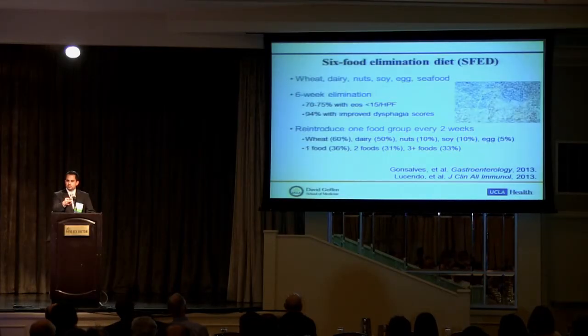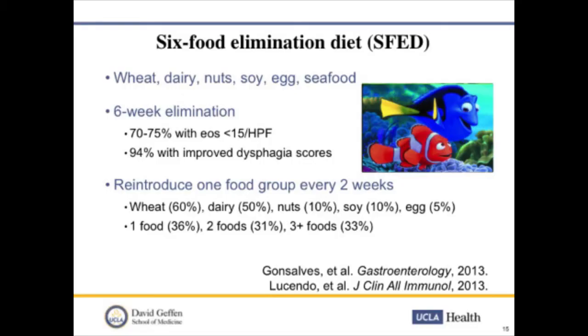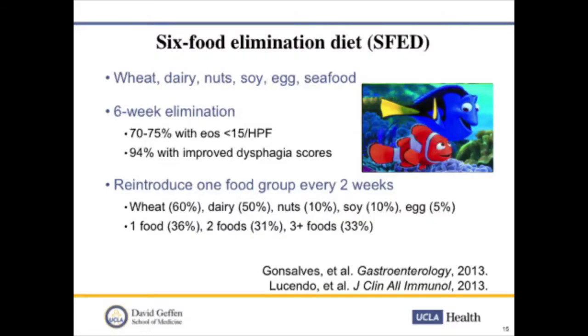The most popular option is the six-food elimination diet. The most allergenic foods are wheat, dairy, soy, nuts, eggs, and seafood — eliminated for six weeks. Studies from Northwestern and Spain showed about 70–75% improvement based on eosinophil count reduction, and over 90% had improvement in dysphagia scores. After six weeks, food groups are reintroduced one at a time. Wheat and dairy were the most common triggers — 60% and 50% respectively — with nuts and soy around 10%, eggs 5%, and seafood not appearing. In the Spanish study, about one-third had one food allergen, one-third had two, and one-third had three or more.